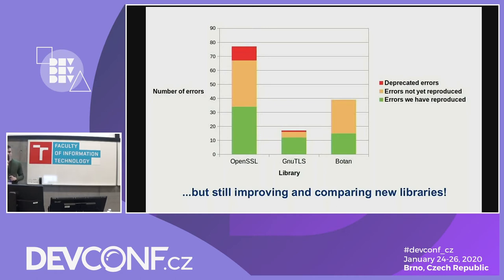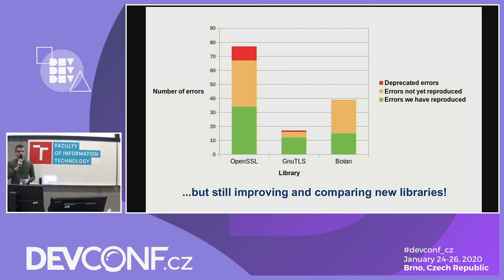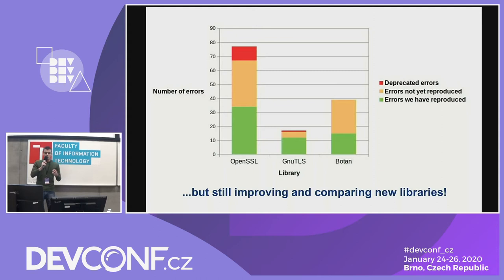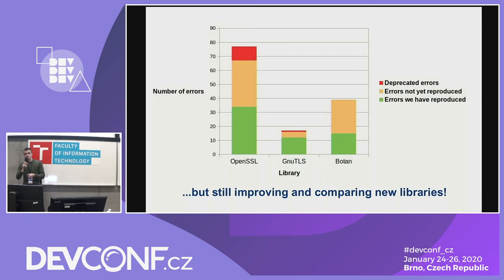The second thing you can see is that there is a massive difference between the total amount of errors between different libraries. In GNU-TLS there is about a quarter of the amount of errors compared to OpenSSL. That will mean two things: either GNU-TLS doesn't do as much control, or OpenSSL has differentiated errors in a much finer grain — so more OpenSSL errors could be mapped against one GNU-TLS error. We are still improving on this and adding new libraries like NSS and embed-TLS.